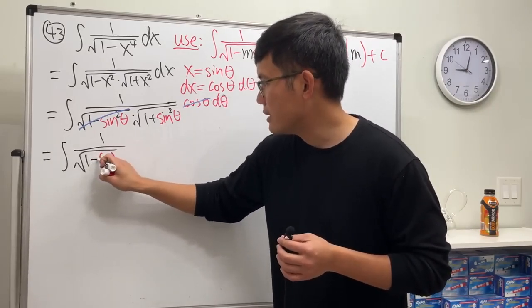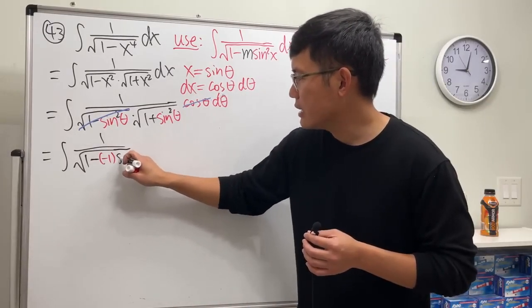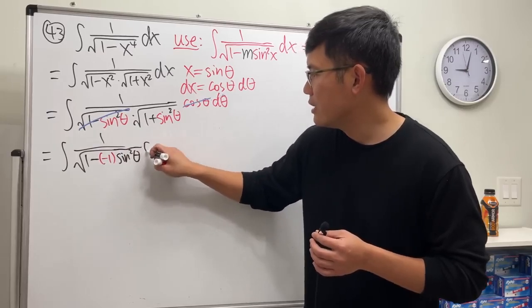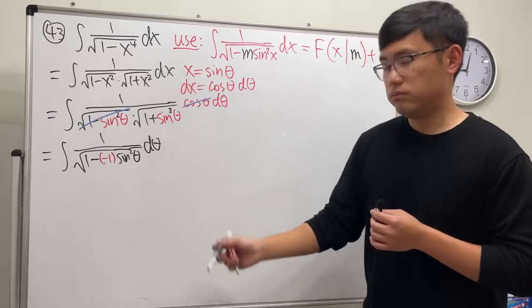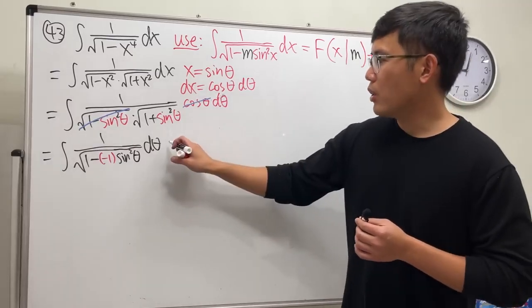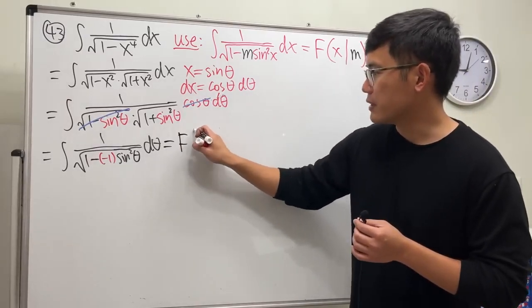Let me write it down like this: minus negative 1, and we have sine squared theta in the theta world. So based on what I told you guys here, this right here is the elliptic integral of first kind.